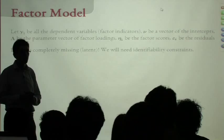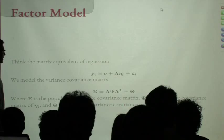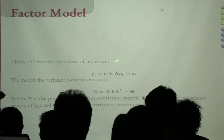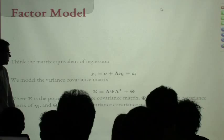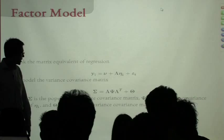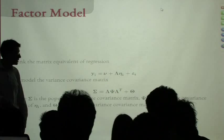Because eta is not observed, we have to identify the model. By convention, we fix one of the factor loadings in lambda to 1. This is because when you have unobserved data, I can put its distribution anywhere — the loadings will be adjusted like in regression to the location and scale of the variable. We also impose a structure on theta, our residuals. The standard factor analytic model says residuals are independent — unique residual variances for each dependent variable with zero covariances.